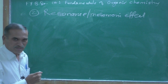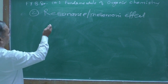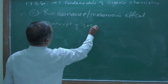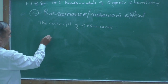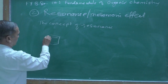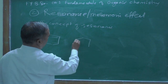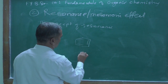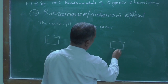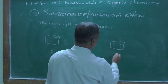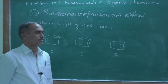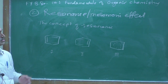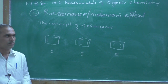Just now we have seen the definition of the resonance effect. Let us see the concept of resonance. I am going to draw some structures on the blackboard. This is structure number one, this is structure number two, and this is structure number three. If you look at the structure written on the blackboard, I am trying to explain the resonance effect or the mesomeric effect.